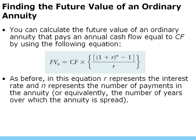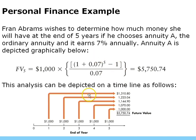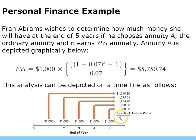For the future value of an ordinary annuity, we have a formula: FV = CF × [(1 + R)^N − 1] ÷ R. Since cash flows are equal, we can put it into one formula. In Fran's example — ordinary annuity, payments start in year one — the first $1,000 grows to about $1,300 because it has the most time to compound. The final payment in year five has zero compounding. The total future value is $5,750 — she invests $5,000 but earns $750 of interest.